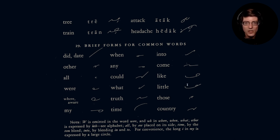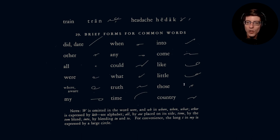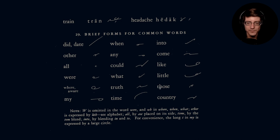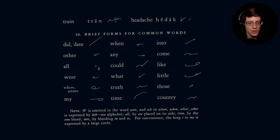So we have these brief forms: did, date, other, all, were, or aware, my, when, any, could, what, truth, time, into, come, like, little, those, and country. There's a note that W is omitted in the word 'were,' and W-H in 'where,' 'when,' and 'what.' Other is expressed by the U-hook, and all by AW or the O-hook. Time uses the TM blend, into by blending 'in' and 'to,' and the long I in 'my' is expressed by a large circle.